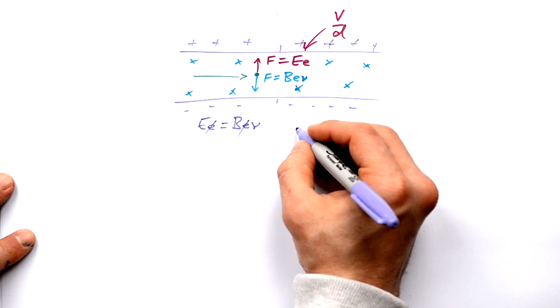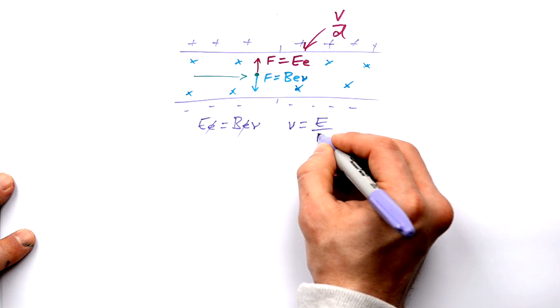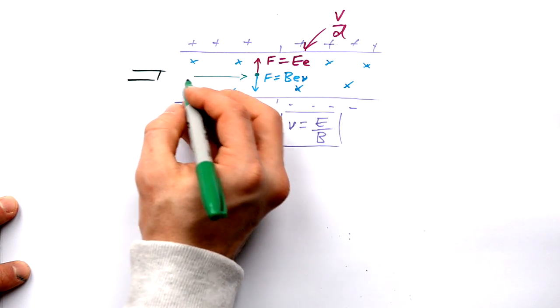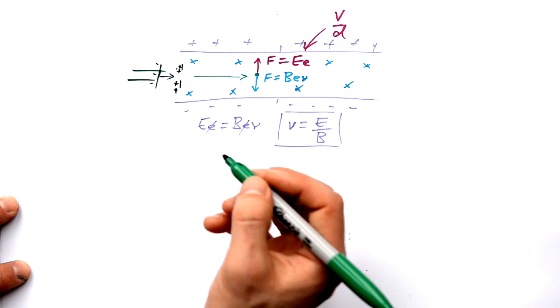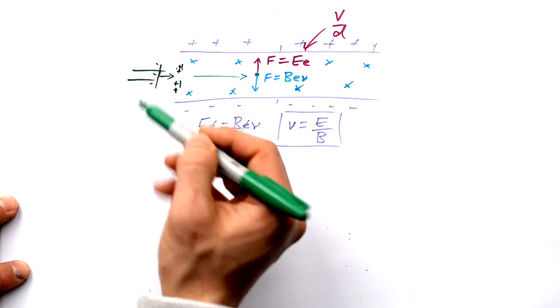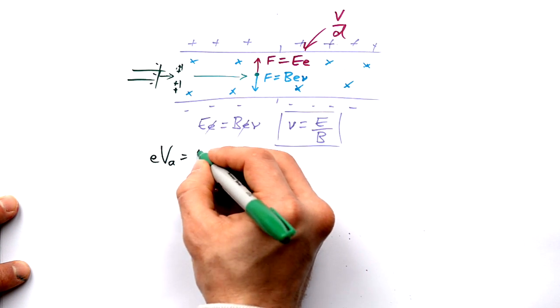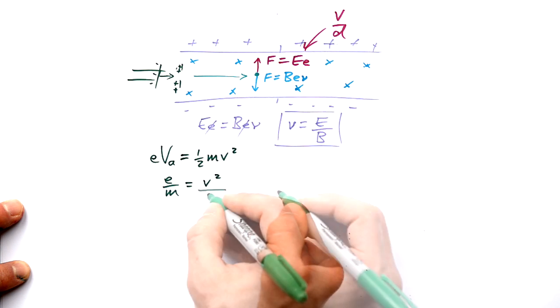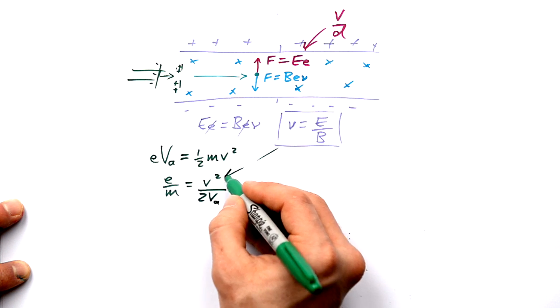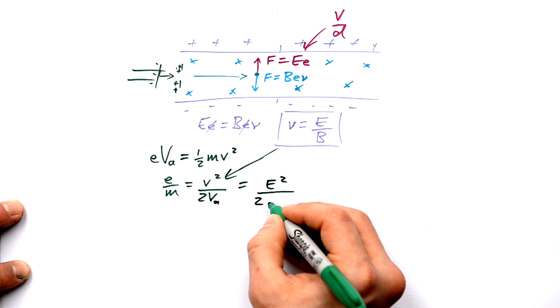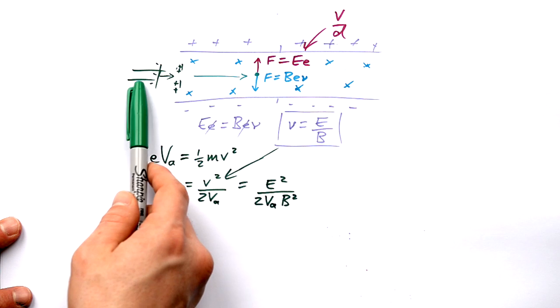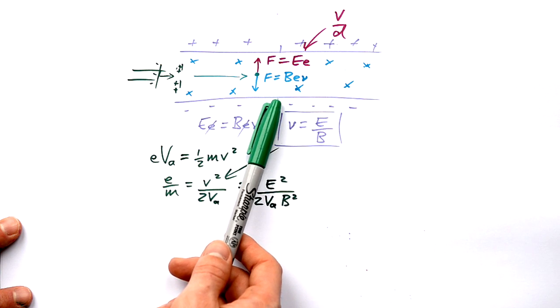Rearrange that, the E's cancel, and we end up with a speed that can be calculated by taking the electric field strength dividing it by the magnetic flux density. Here's our electron gun. The electrons coming in here have been fired from this electron gun. As per usual we have EVA equals half MV squared. Rearrange that for specific charge. We have E over M equals V squared over 2VA. Popping this into here gives us E squared over 2VA B squared. So knowing the electric field strength, magnetic flux density, and the accelerating PD that fired the electrons to begin with, we can find out the specific charge this way. By the way, this is also used to select velocities for mass spectrometry as well.